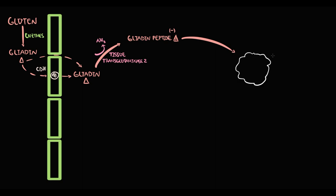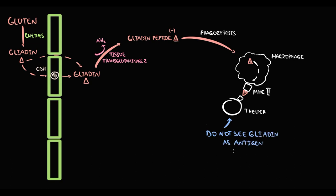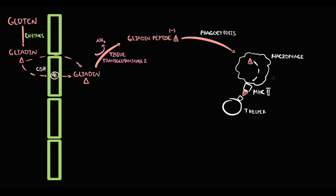In the lamina propria, antigen-presenting cells — mostly macrophages — phagocytose gliadin peptides and present them on their MHC2 receptors to T-helpers. A crucial function of T-helpers is to determine if a substance is an antigen or not. T-helpers bind to the MHC2 receptor and scan the gliadin peptide. In healthy individuals, T-helpers do not see any danger in gliadin peptides, so they do not react. But if T-helpers recognize gliadin as an antigen, they will immediately trigger an inflammatory response.